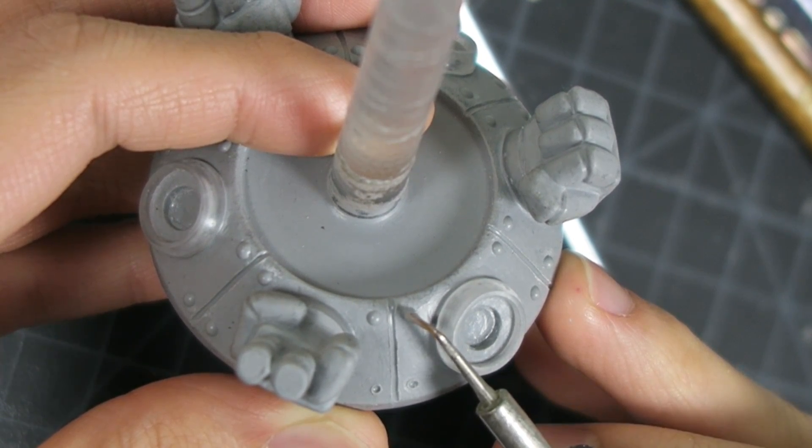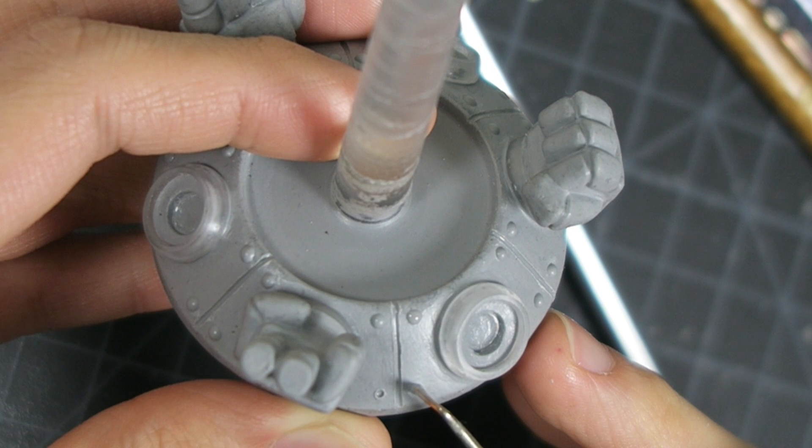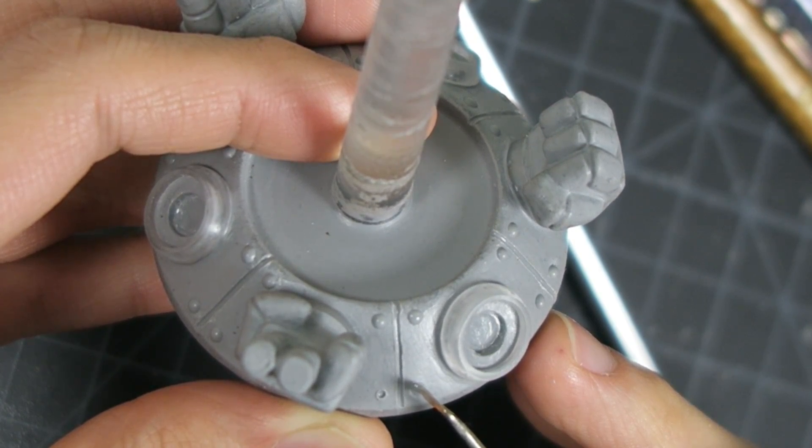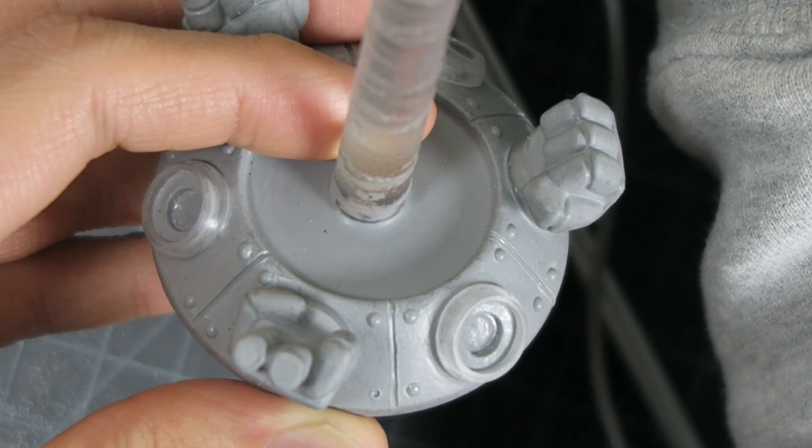Since this is supposed to be a robot I wanted to put bolts along these panel lines. Notice that I'm gently digging the tip of my tool into the surface of the sculpt and not just letting the clay drip onto it. This helps weld the clay in place so it can't just fall off.